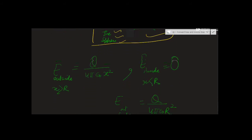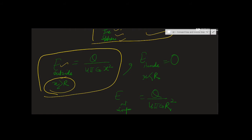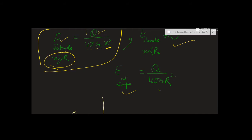We now have three results. Electric field outside (x > R): E = (1/4πε₀)·q/x². Electric field inside: E = 0. Electric field at the surface: E = (1/4πε₀)·q/R². The difference between outside and surface formulas is that x is replaced by R.